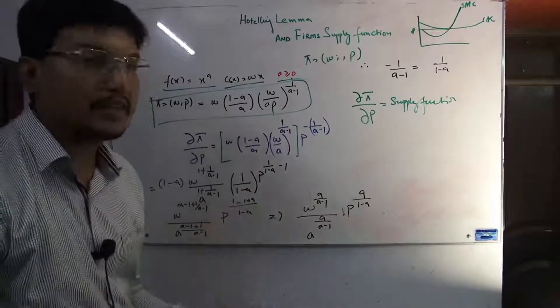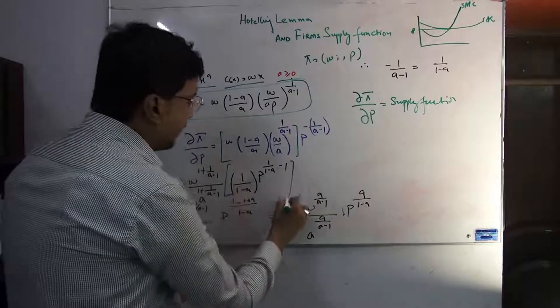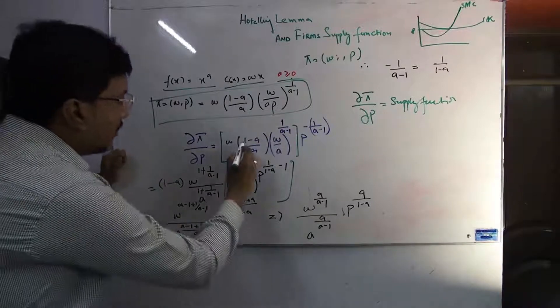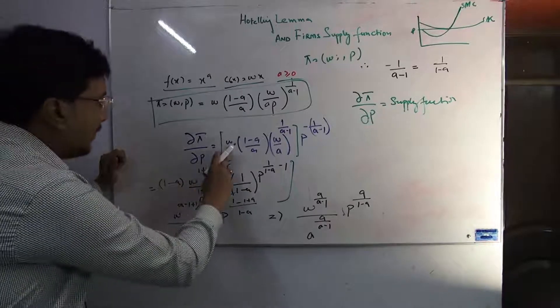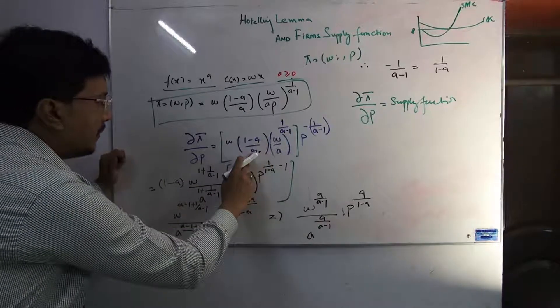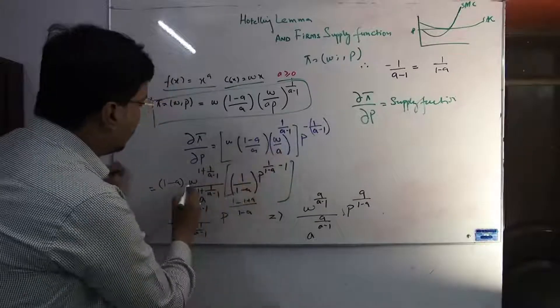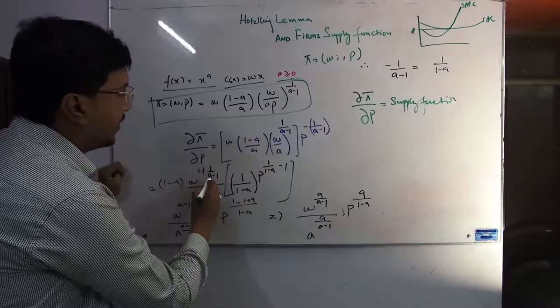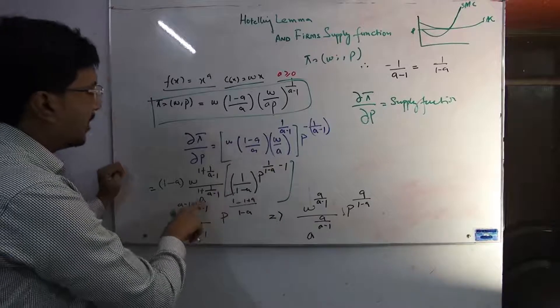Before I explain this portion, let me give you its derivative. We've replaced it with 1/(1-a). The derivative is finished. Up to here, there's no confusion - our multiplication formula is working. Now let's see what we did with this: we took (1-a) out in brackets. Here w was there, here w was there, here a was there, here a was there. We basically solved these. When we multiplied w with w and added the powers, it became 1 + 1/a - a. When we did this with a, the power became 1 + 1/(a-1).